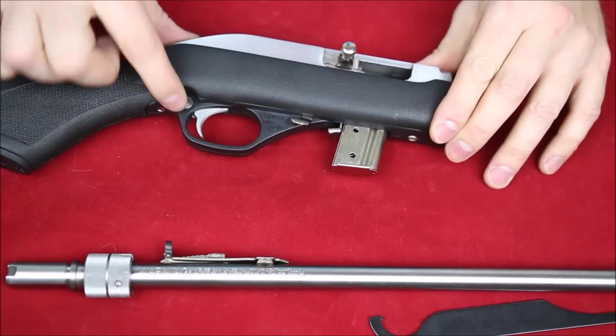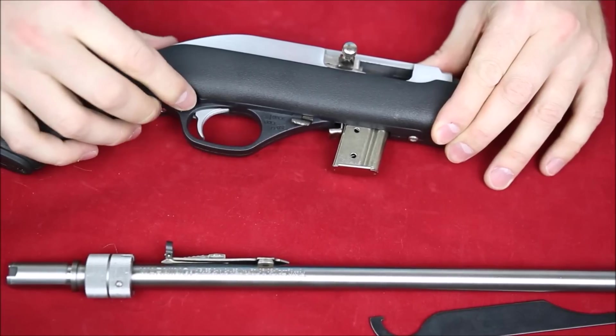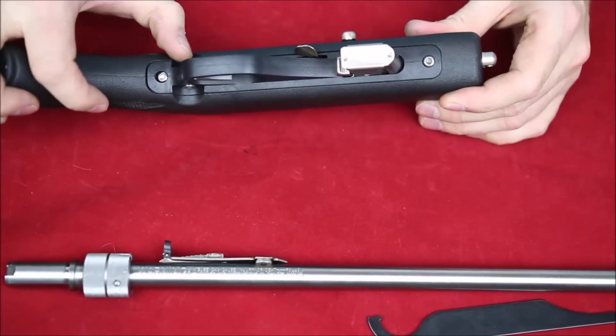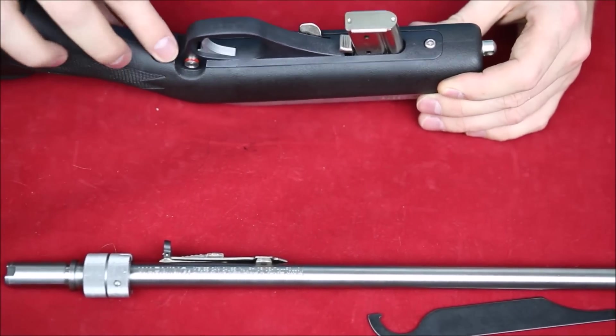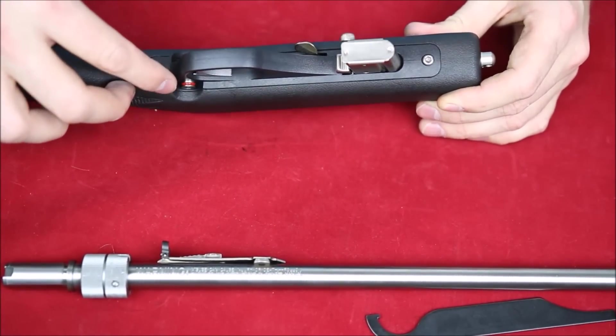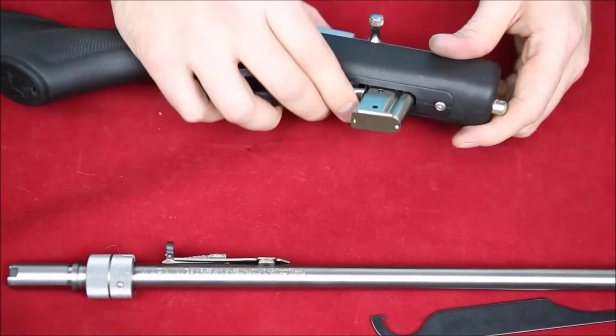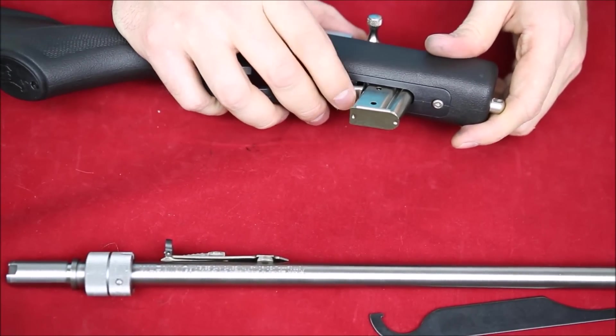Towards the top here, we've got a cross-bolt safety, nice and light. There's safe and there's fire, and we can see there's a red line right there telling us that thing's ready to fire. Over here we've got our bolt release.